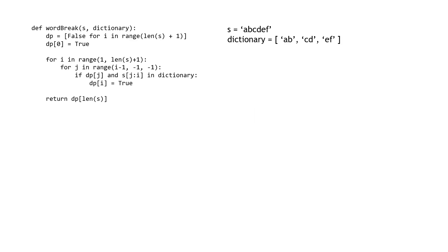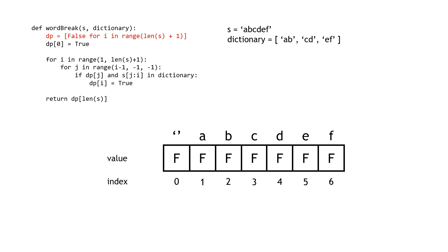Now that we've seen the top-down approach, let's move on to the bottom-up approach. For this problem, I think it's a good idea to show the code and explain it simultaneously. I'm going to trace through a situation where the string is ABCDEF and the dictionary is composed of the strings AB, CD, EF, and ABCDEF. As I trace through this, I'll explain the DP table and why this approach makes sense.